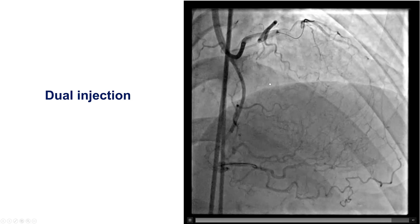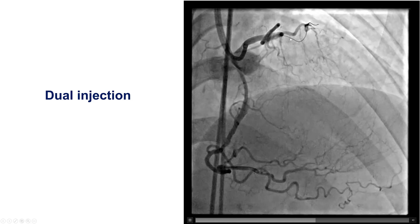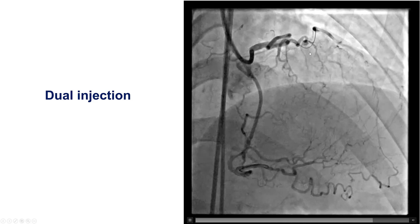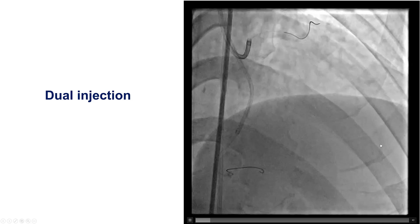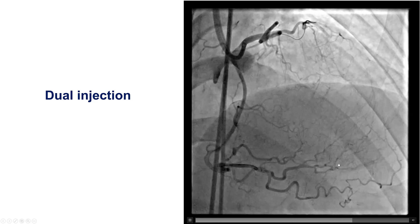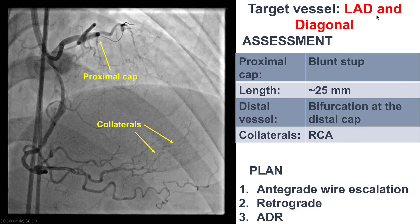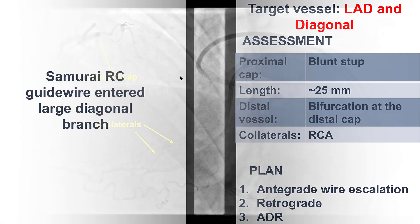This is a dual injection. The patient has a proximal LAD with an ambiguous cap. There is a diffusely diseased distal vessel. The length is about 25-30 millimeters. There are septal collaterals from the PDA filling the vessel. The plan was to start with antegrade wiring to clarify the ambiguity, followed by retrograde through the septal collaterals, with ADR as the last option because there was a large diagonal branch.